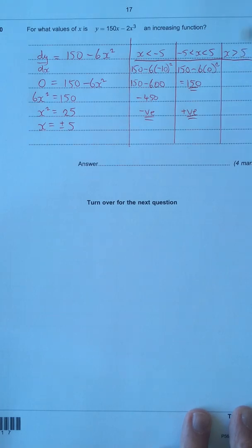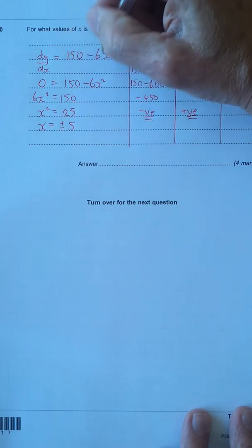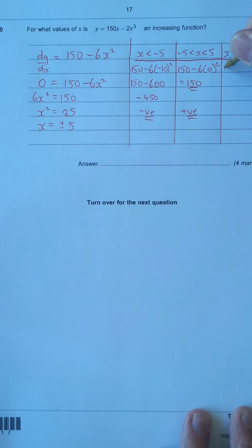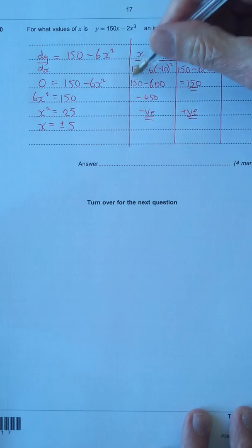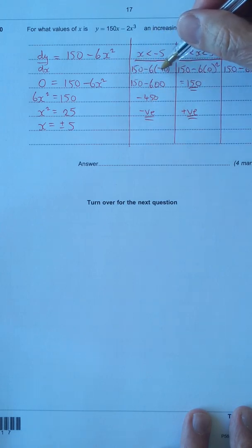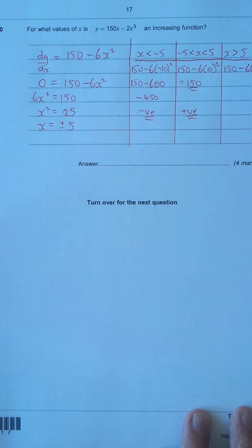X is greater than 5, I'm just going to choose a nice easy value which I think is 10, and substitute into the differential again. So we've got 150 minus 6 times 10 squared, and as you can see, because we had a minus times a minus is a plus, we're going to get the same value here. We're going to get 150 minus 600, which is minus 450, which is negative.